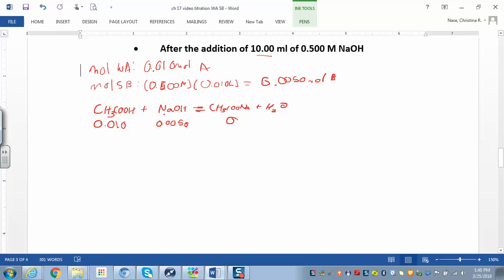I'm going to use up all of my sodium hydroxide. I'll use up half of my weak acid, ending up with 0.005 moles. I'm also making weak base. All of that strong base turns into weak base as I neutralize the weak acid.